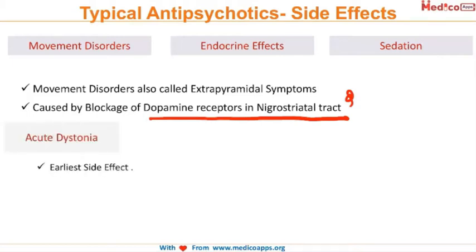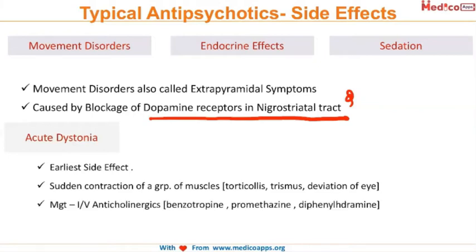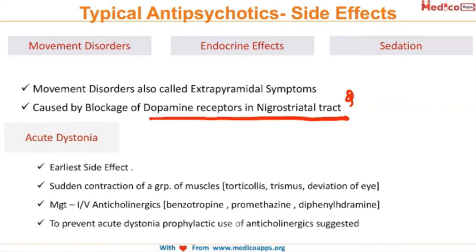One of the most earliest extrapyramidal side effects is acute dystonia. This involves sudden contraction of a group of muscles. The patient will have torticollis — that is neck movement — trismus, or deviation of the eye.